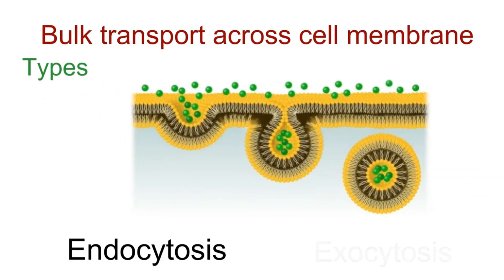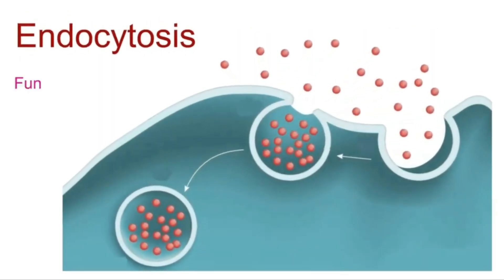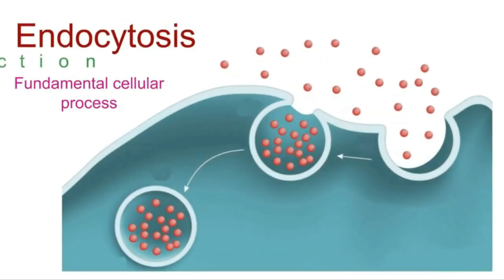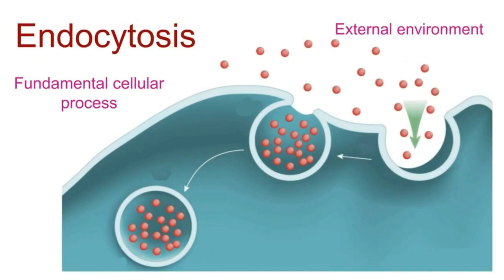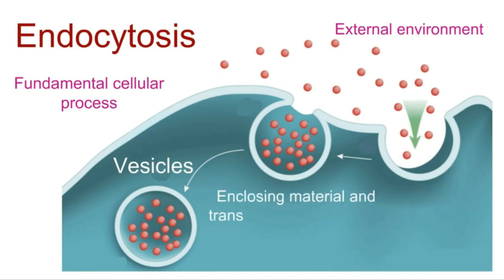Let's first talk about endocytosis. Endocytosis is a fundamental cellular process that allows cells to take in substances from their external environment. This process involves the formation of vesicles by invaginating the cell's plasma membrane, enclosing extracellular material and transporting it into the cell's interior. There are several types of endocytosis.